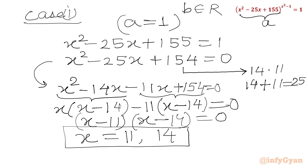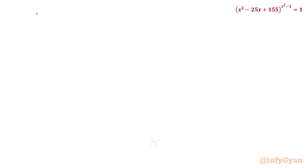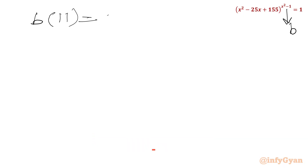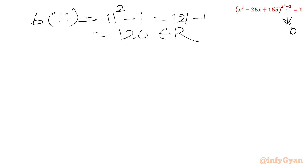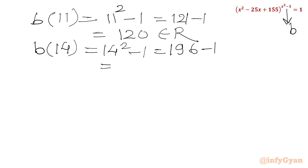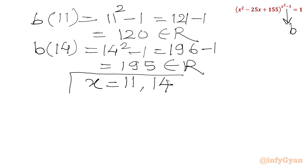Now we have to make sure that for these x values, our exponent or power should be real. I will calculate b(11) and b(14). b(11) equals 11 squared minus 1 equals 121 minus 1 equals 120, which is a real number. b(14) equals 14 squared minus 1 equals 196 minus 1 equals 195, also a real number. So our solutions x equal to 11 and x equal to 14 are both accepted.